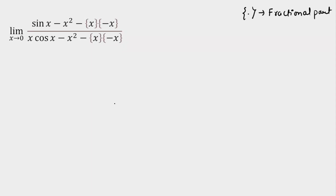Today we're going to solve a question on limits. The question is: limit as x tends to 0 of sin(x) minus x² times the fractional part of x, multiplied by the fractional part of minus x, divided by a denominator involving a similar variation with fractional part of x. First of all, I'm going to check the indeterminate form — if you put 0, it is 0/0 form.